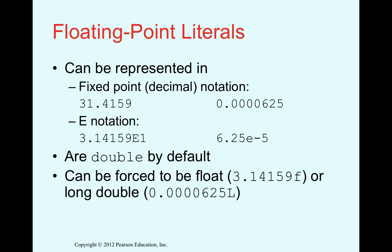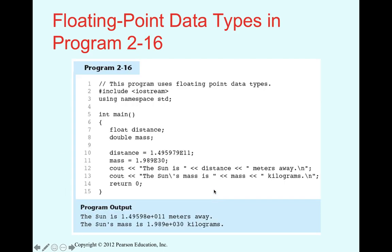To force a literal to be a float, append 'f' at the end. To force it to be a long double, append a capital 'L'. In the example, we include iostream, define variables of type float and double, assign values using scientific notation like e11 (multiplied by 10 to the power of 11), and print them.